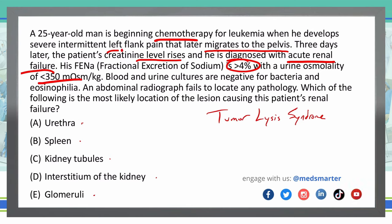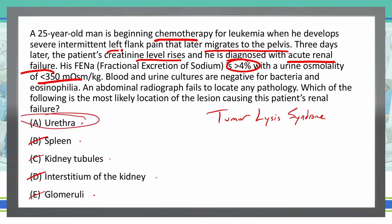We have left flank pain — that could be a kidney stone. Then it migrates to the pelvis; maybe that kidney stone was moving down, causing pain in the ureters and then getting into the bladder. The pain in the pelvis tells me it's probably somewhere along the urethral tract. Therefore, I would rule out an interstitium of the kidney problem, glomeruli is probably not correct, kidney tubules are not going to be an option, and the spleen is out after we discussed pain that has moved into the pelvis. That leaves us with urethra as our only option and final answer.